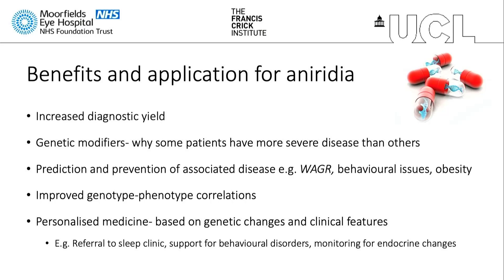Whole genome sequencing increases the diagnostic yield for patients. It may allow us to identify genetic modifiers, which could explain why some patients have more severe or milder disease than others. It allows us to predict and prevent associated disease — specifically with WAGR but also PAX6. A patient may have a higher risk of behavioral issues or obesity, so we can assemble the correct team. It helps improve genotype-phenotype correlations and provide more personalized medicine, such as referring patients to a sleep clinic, supporting behavioral disorders, or monitoring endocrine changes to prevent fulminant diabetes.